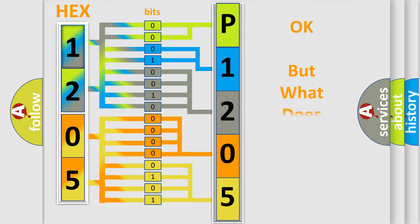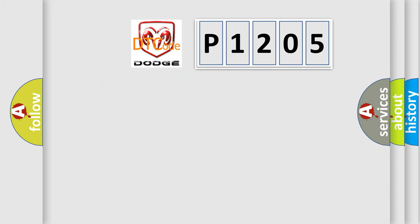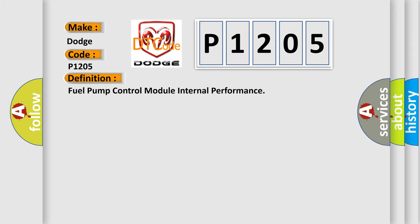We now know in what way the diagnostic tool translates the received information into a more comprehensible format. The number itself does not make sense to us if we cannot assign information about what it actually expresses. So, what does the diagnostic trouble code P1205 interpret specifically? For Dodge vehicles, the basic definition is: Fuel Pump Control Module Internal Performance.